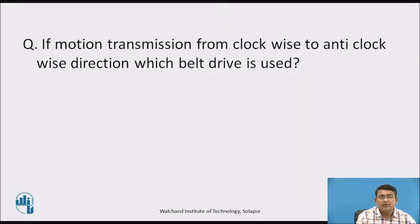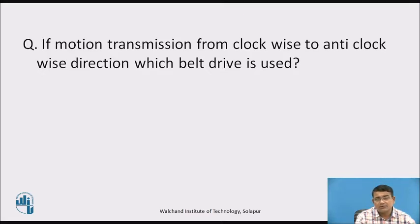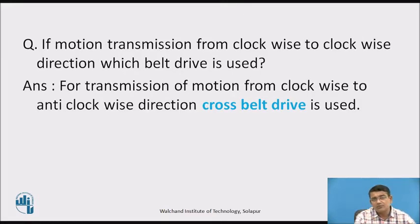In the previous session, I explained regarding the derivation of the cross belt drive. Here is a question: if motion transmission is from clockwise to anticlockwise direction, which belt drive is used? The answer is: for transmission of motion from clockwise to anticlockwise direction, you use the cross belt drive.